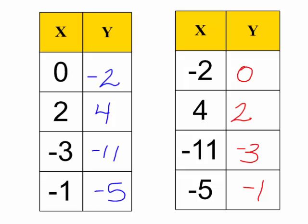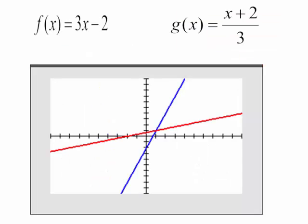Let's look at this on our graphing calculator. I graphed each of these lines in my calculator. On one line, I have the ordered pair negative 2, 0. On the other line, I have the ordered pair 0, negative 2.